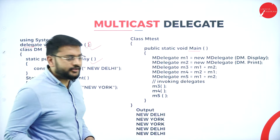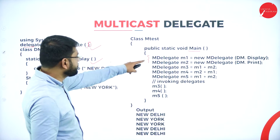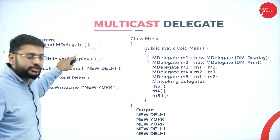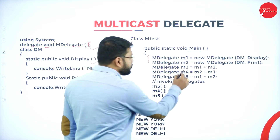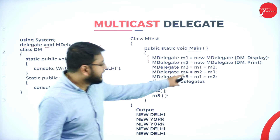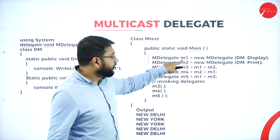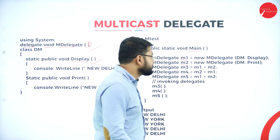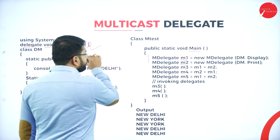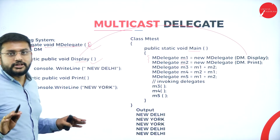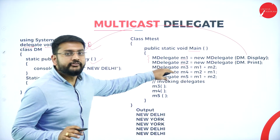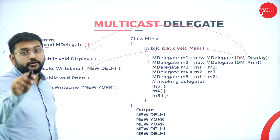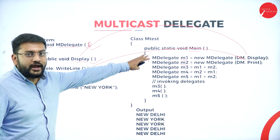The most important part is creating the instance for the delegate. M1 is the instance I'm creating, and M2 is the instance I'm creating. With M1, I'm creating a reference to the display method — so in M1, we are storing the reference of display. And for M2, I'm creating the reference to the print method. So M1 refers to display and M2 refers to print.